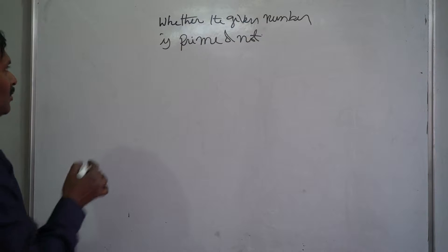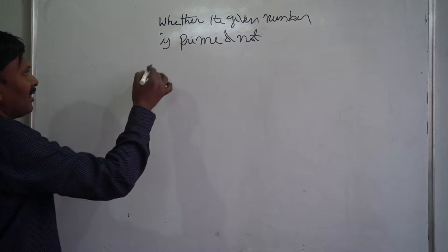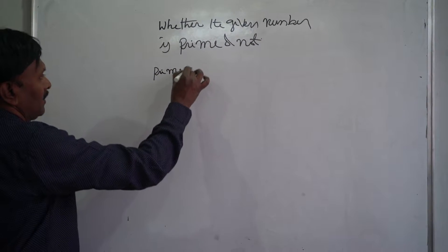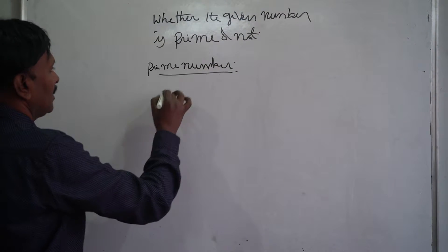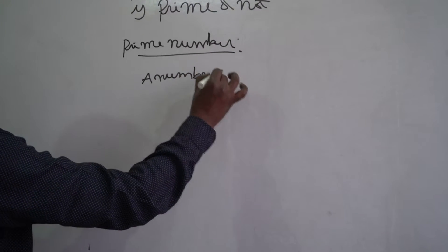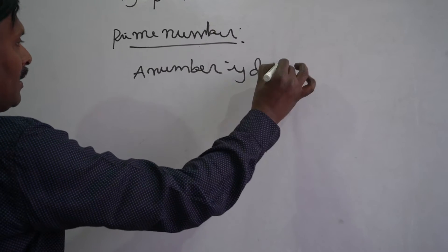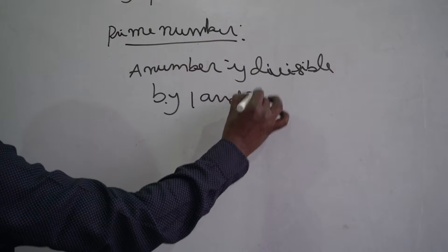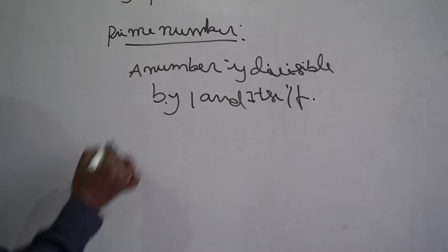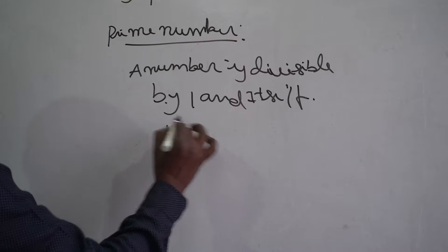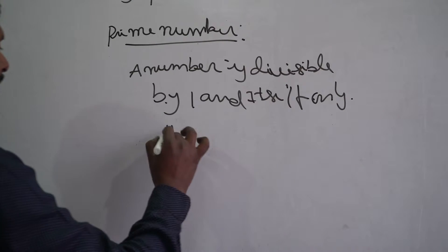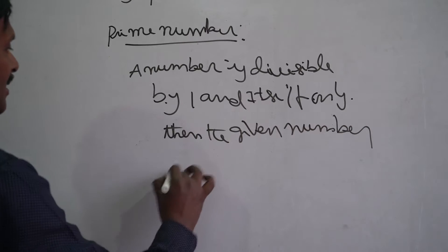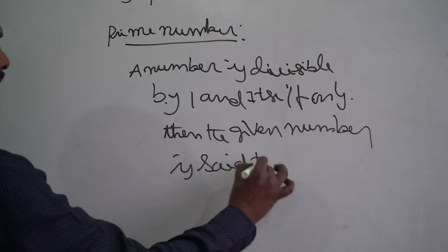See, whether the given number is prime or not, we have to check it. See example. First of all, we will see the definition of a prime number. A number is divisible by one and itself only — then the given number is said to be a prime number.